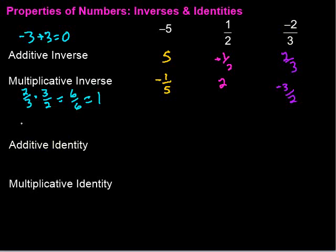Additive identity and the multiplicative identity. The identities are where we do an operation to a number and we keep the same number. We're left with the same exact number. So what can we add to any number and be left with the same number? Well, that is zero. So the additive identity, just a quick example of that, would be like four plus zero. Well, that's still four. So if we add zero, we end up with the same thing that we started with.